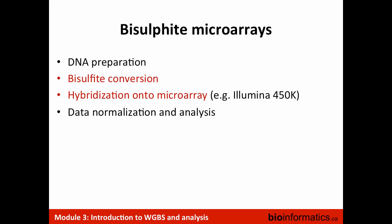How do bisulfite microarrays work? Without going into a lot of detail, you prepare the DNA, do the bisulfite conversion step, and then hybridize onto a microarray that is specifically looking at some of these CpGs that are potentially methylated. It's quite similar to genotyping microarrays in many ways, except that we're specifically targeting the methylated C's and looking at differential methylation using these arrays.